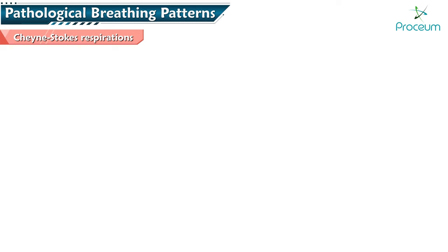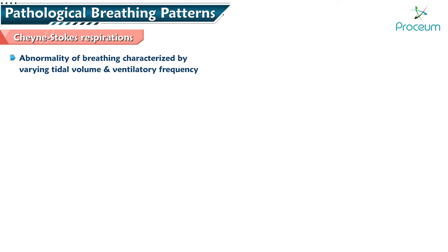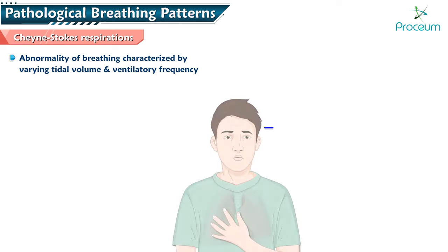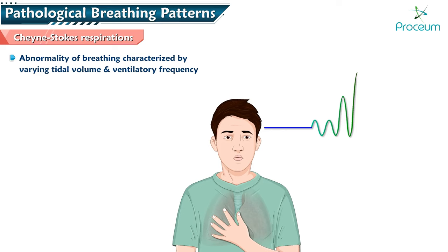Cheyne-Stokes ventilation is another abnormality of breathing characterized by varying tidal volume and ventilatory frequency. After a period of apnea, tidal volume and respiratory frequency increase progressively over several breaths, and then they progressively decrease until apnea recurs.